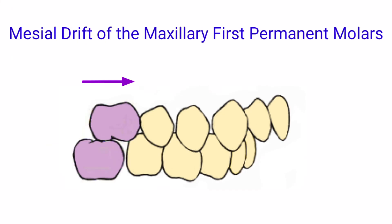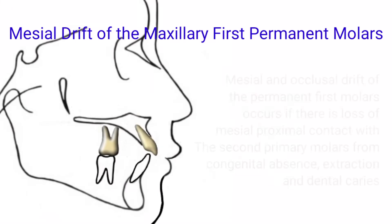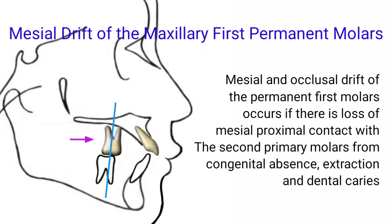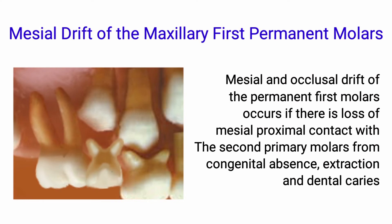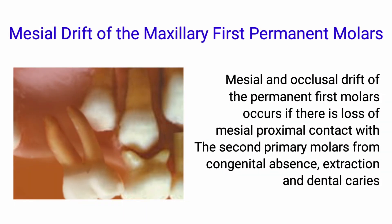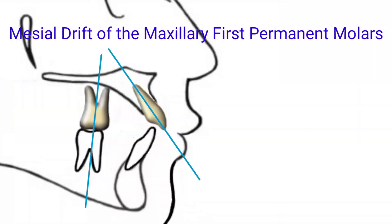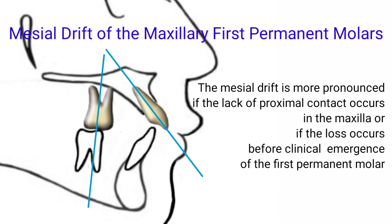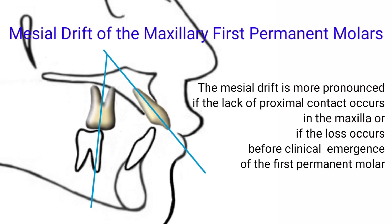Mesial drift of the maxillary first permanent molars: Mesial and occlusal drift of the permanent first molars occurs if there is loss of mesial proximal contact with the second primary molars from congenital absence, extraction, and dental caries. Mesial drift is more pronounced if the lack of proximal contact occurs in the maxilla or if the loss occurs before clinical emergence of the first permanent molar.